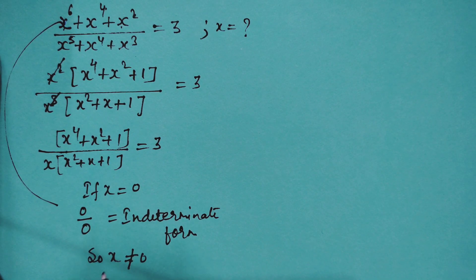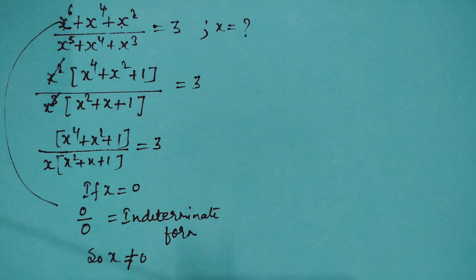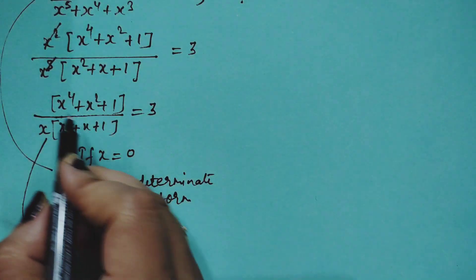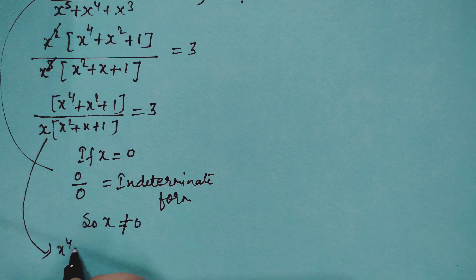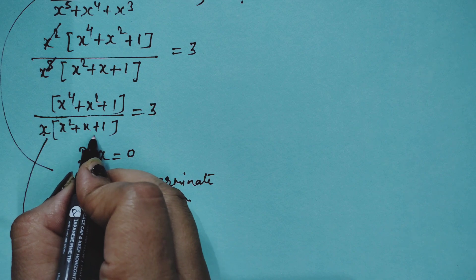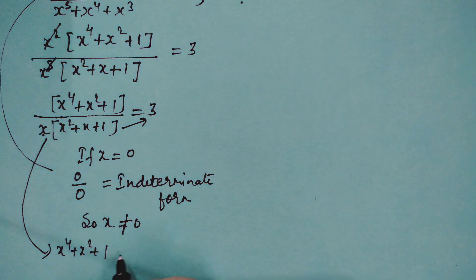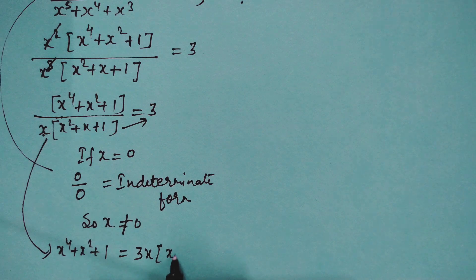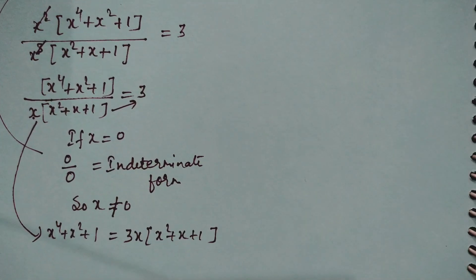So starting again: x⁴ + x² + 1 = 3x(x² + x + 1). Cross-multiplying, the right-hand side becomes 3x·(x² + x + 1).